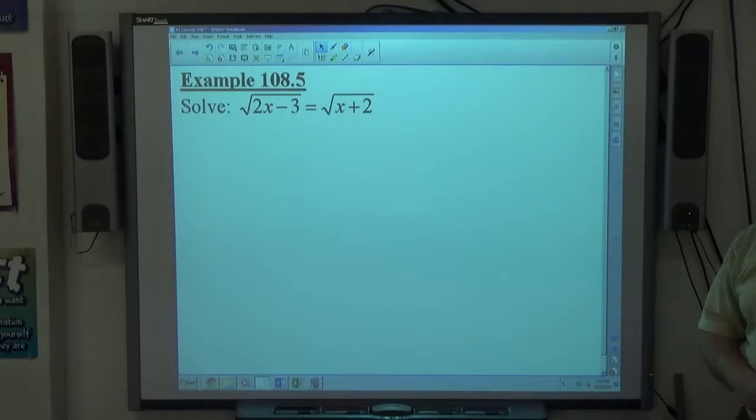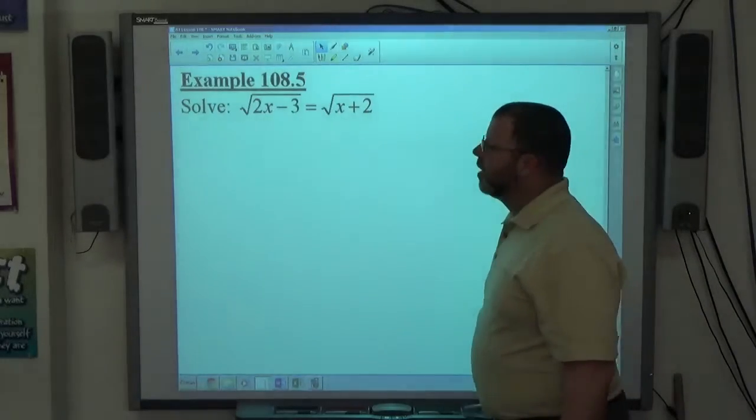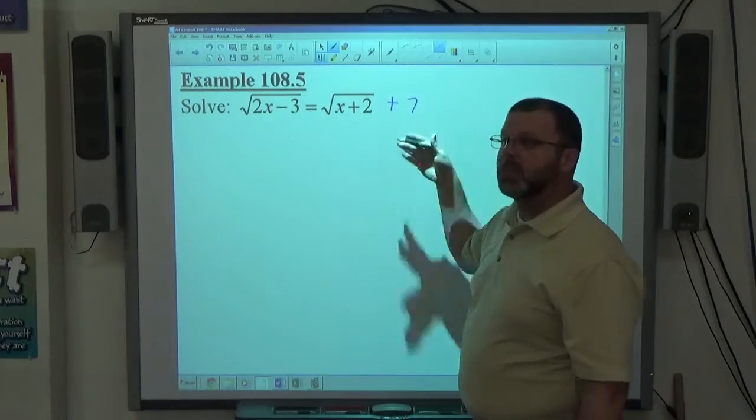The last example you'll notice has a radical on both sides, which would make it more difficult if there was more to this problem. If you have a radical equals a radical, and let's say there's plus 7 or something like that, now it's a hard problem.